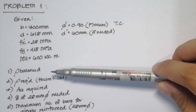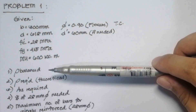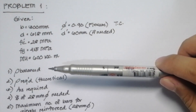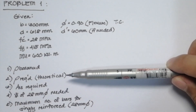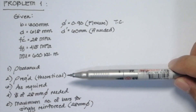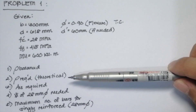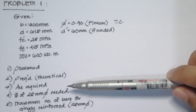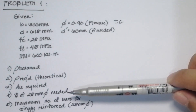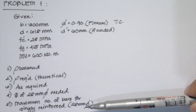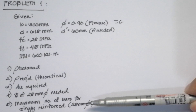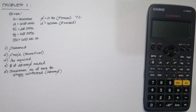The first question is to find the balanced reinforcement ratio, ρ_balance. Next is to find the required reinforcement ratio. Third is to find the AS required, or the area of steel required. Fourth is to find the number of 28mm diameter bars needed. And lastly, we need to find the maximum number of bars for singly reinforced beam using 28mm diameter.